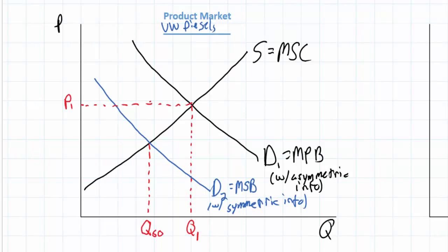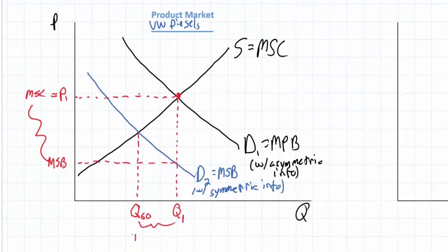At Q1, the marginal social benefit of Volkswagen diesels was found right here. This is the marginal social benefit. But the cost imposed on society was much higher at the MSC curve up here at the price. So we have a situation in which the marginal social cost is greater than the marginal social benefit. So resources were over allocated towards diesel cars. We can say that too many cars were sold.